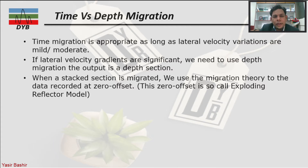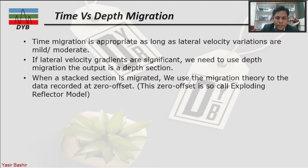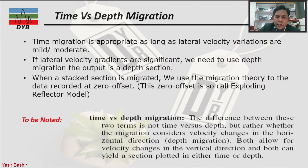If lateral velocity gradients are significant, you must consider the laterally varying velocity and use depth migration. The output of depth migration will be a depth section. When a stacked section is migrated, we apply migration theory to data recorded at zero offset. This zero offset case is also called the exploding reflector mode.